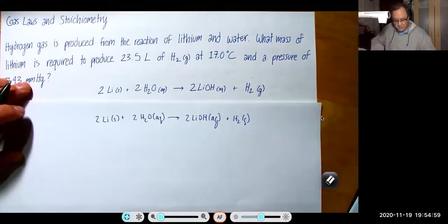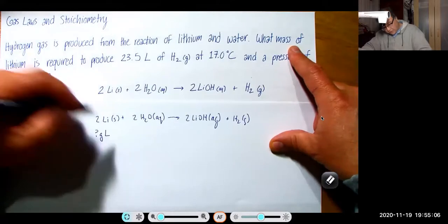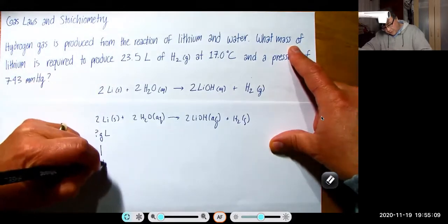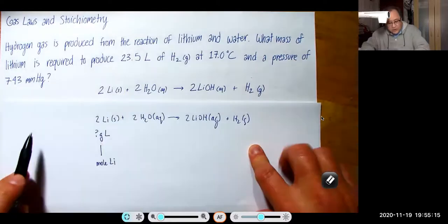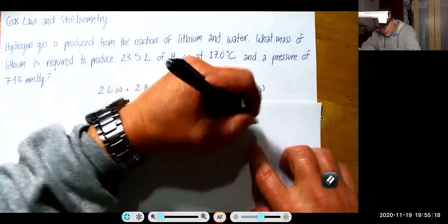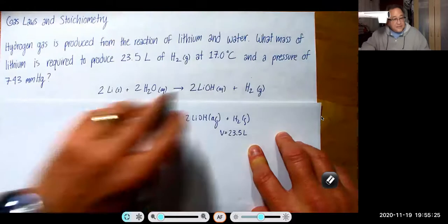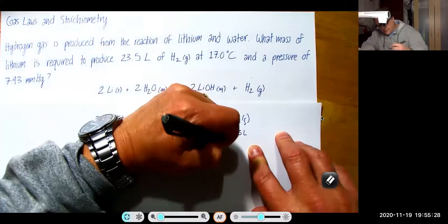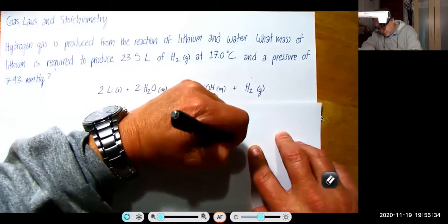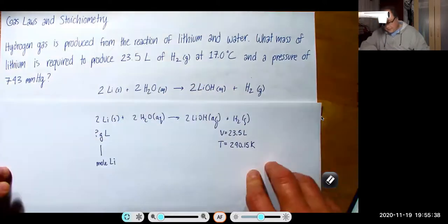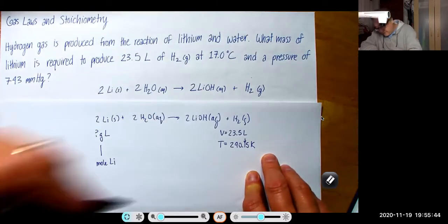What mass of lithium is required to produce 23.5 liters of H2 gas at 17.0 degrees Celsius and a pressure of 743 millimeters of mercury. We're also given a number of things here. So we want the mass of lithium, which means I probably am going to need moles of lithium somewhere along the line. That temperature is going to be 273.15 plus 17, which is 290.15 Kelvin. And this is only good to the 10th.